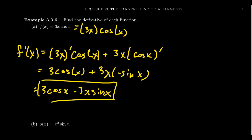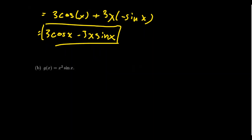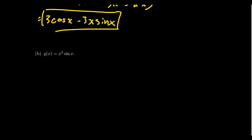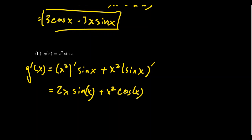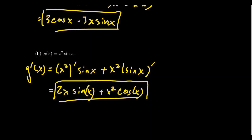Knowing the derivative of cosine was very useful here combined with the product rule. Similarly, for g of x equals x squared times sine of x, by the product rule the derivative is x squared prime times sine of x plus x squared times the derivative of sine. The derivative of x squared by the power rule is 2x, and the derivative of sine is cosine of x. So we see that calculating derivatives involving sines and cosines is straightforward once we know that the derivative of sine is cosine and the derivative of cosine is negative sine.